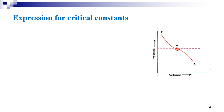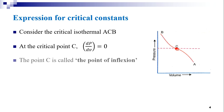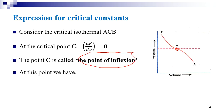At point C, the tangent crosses the curve, as shown by the dotted line. The tangent at such a point is said to be stationary and the point is called the point of inflection. Therefore, at the critical point C, we have dp/dv equal to zero and d²p/dv² equal to zero.